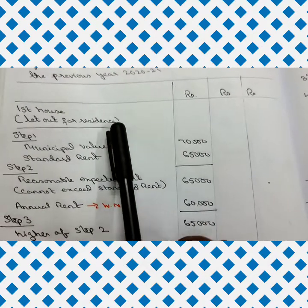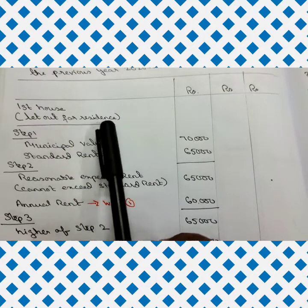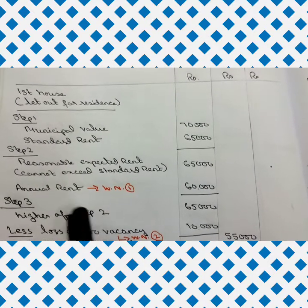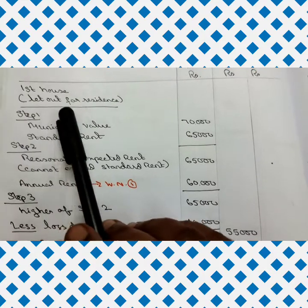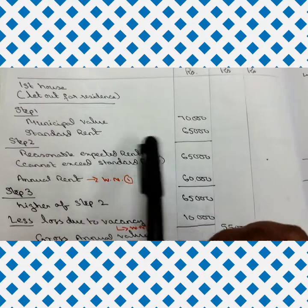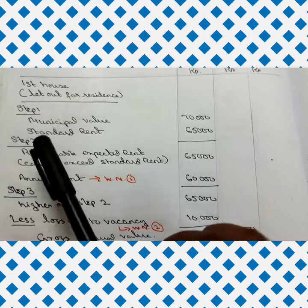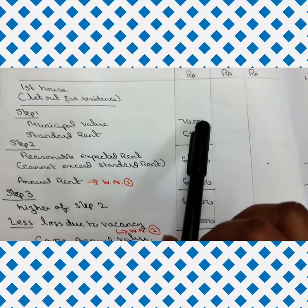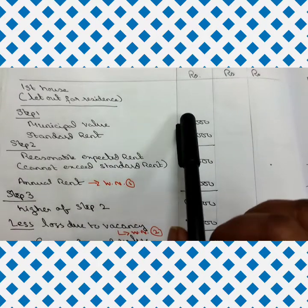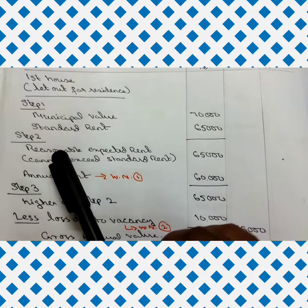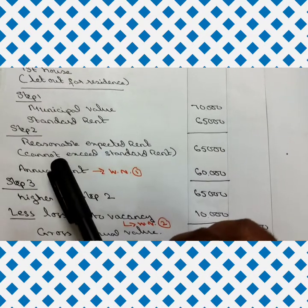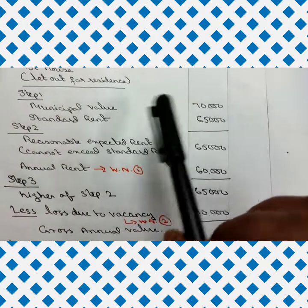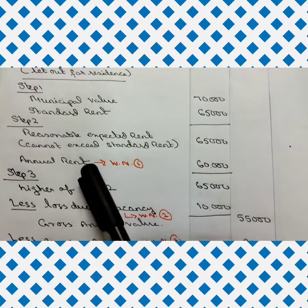For the first house, the nature of occupancy is 'let out for residence.' To calculate Gross Annual Value, Step 1: municipal value is 70,000 and standard rent is 65,000. The reasonable expected rent cannot exceed standard rent, so since municipal value exceeds standard rent, the reasonable expected rent is 65,000.